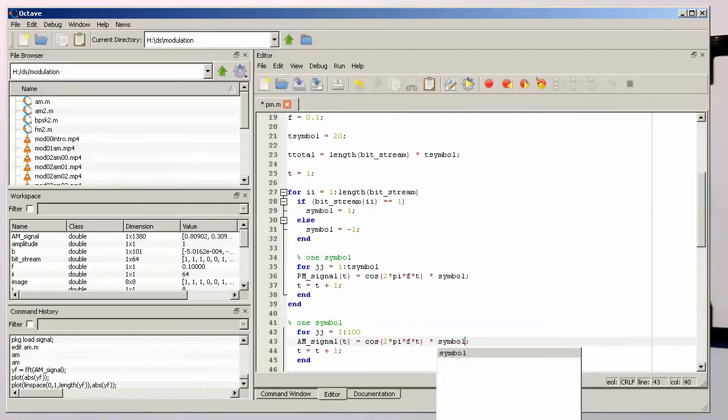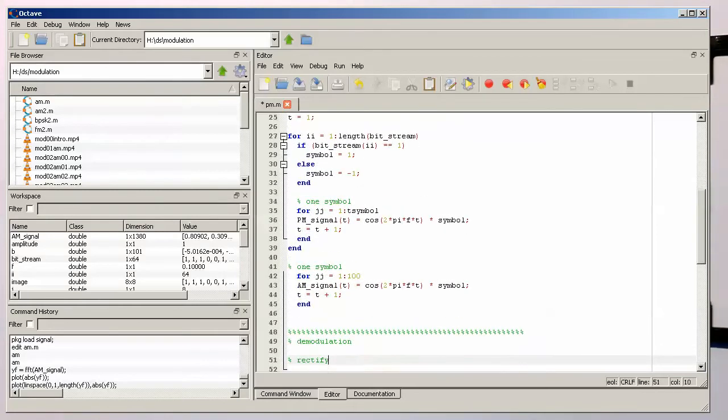But the important thing is now that we have a one and a minus one. And through this here, we are generating a phase jump. So every time the switch is from a zero to one.